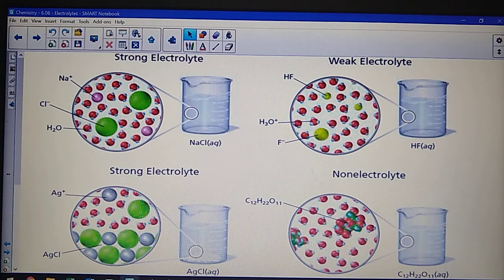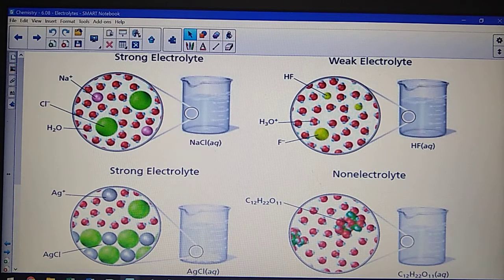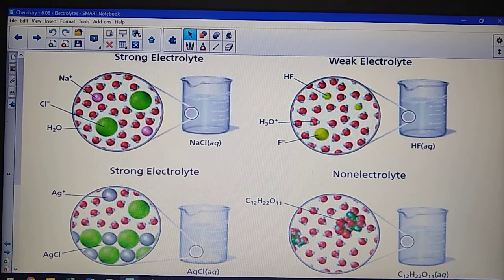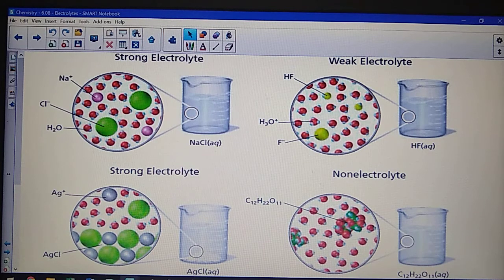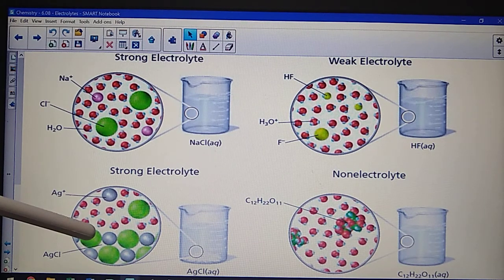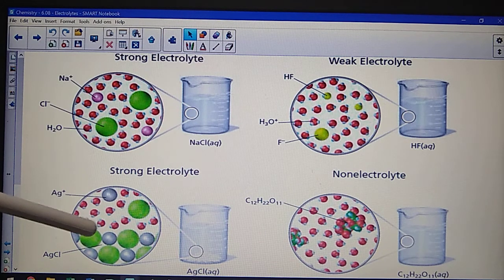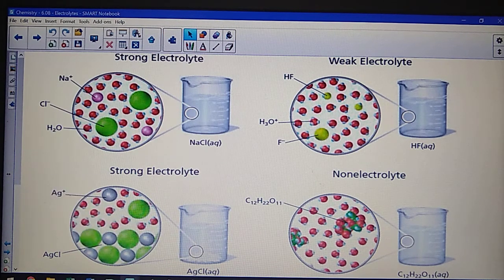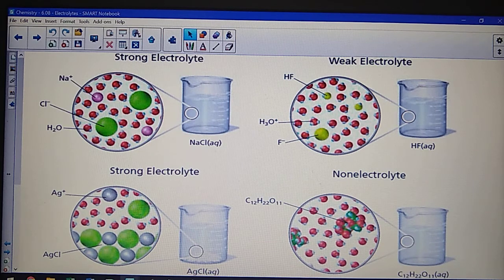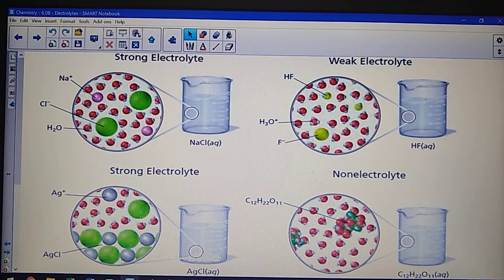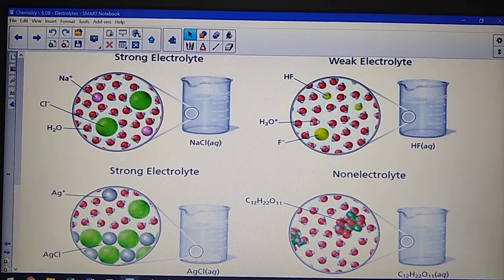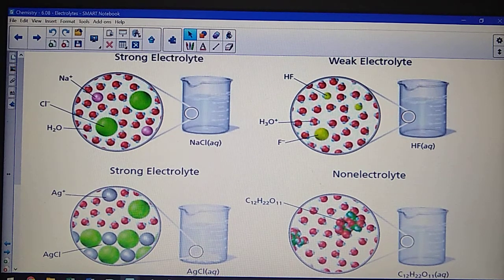But I want to be clear about something. The strength refers to what degree it breaks up into ions. It does not tell you how much it dissolves. Silver chloride is not very soluble at all in water. Most of it will settle to the bottom of the beaker. However, those few ions that do get dissolved are broken up, and therefore silver chloride is considered a strong electrolyte, even though it is very insoluble.